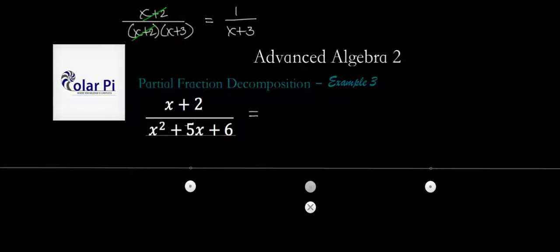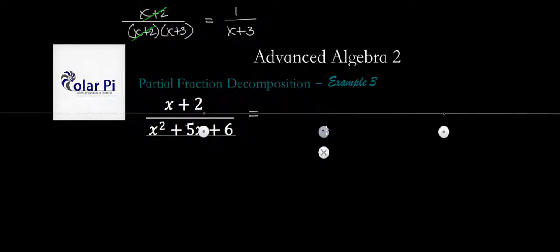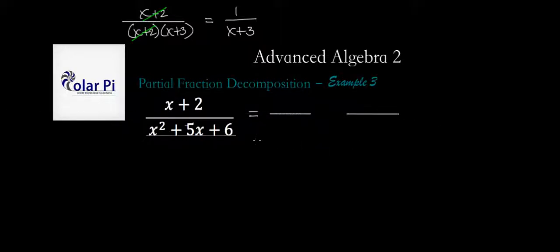Now, as usual, we start by writing that this is going to be, since the denominators are quadratic, we know at most we can only get two linear factors out of it. So we write two rational expressions that are going to equal to this, and the denominator of one of them is going to be one of the factors of this. So x plus 2, and then here is x plus 3.